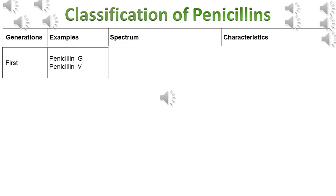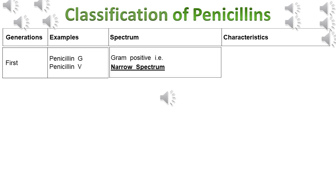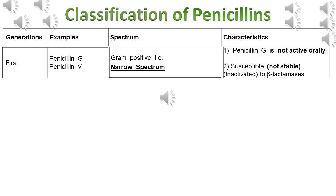The first generation of penicillins — examples are Penicillin G and Penicillin V — have a narrow spectrum of activity, meaning they kill gram-positive bacteria. Penicillin G is not active orally and is susceptible to beta-lactamases. If bacteria produce beta-lactamase enzyme, the antibiotic is destroyed and cannot kill bacteria, so the infection cannot be treated. Disadvantages of the first generation: narrow spectrum, not active orally, and not stable to beta-lactamases.